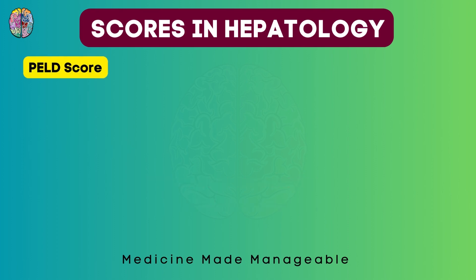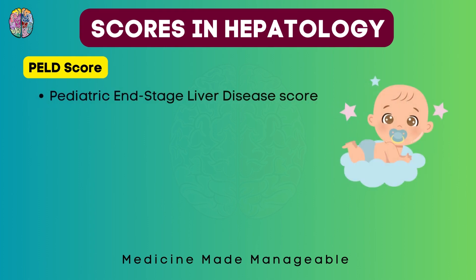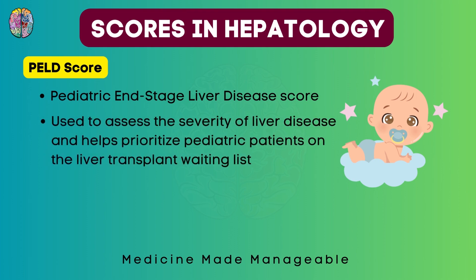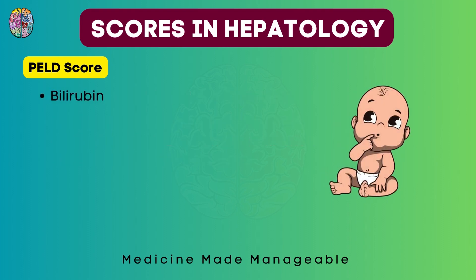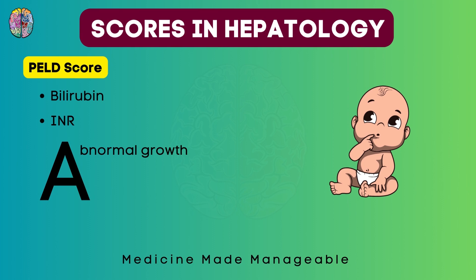There's another score called the PELD score — Pediatric End Stage Liver Disease score. It helps to prioritize pediatric patients and also helps to assess the severity of liver disease. Again, bilirubin and INR are common components. Then there are 3 things which start with the letter A: abnormal growth, albumin, and age. These 5 components make up the PELD score.